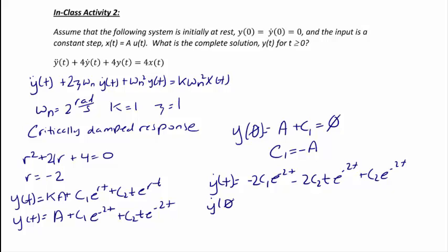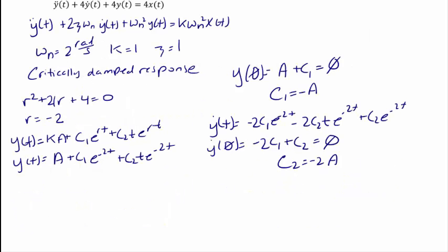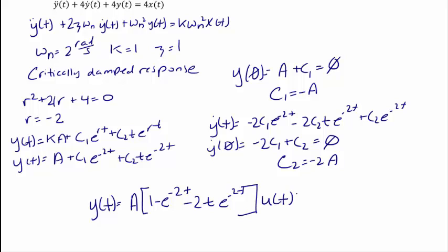Taking the derivative: y-dot of t equals negative 2c1 e to the negative 2t minus 2c2 t e to the negative 2t plus c2 e to the negative 2t. From y-dot of zero equals zero: negative 2c1 plus c2 equals zero. Since c1 equals negative a, we get c2 equals negative 2a. The final solution is y of t equals a times open parenthesis 1 minus e to the negative 2t minus 2t e to the negative 2t close parenthesis, multiplied by u of t for t greater than or equal to zero.